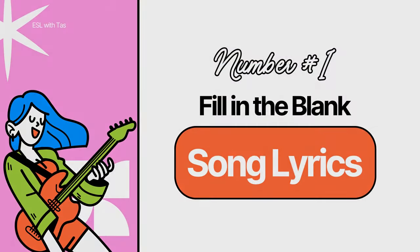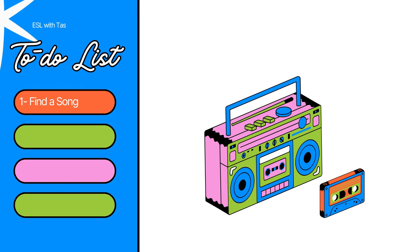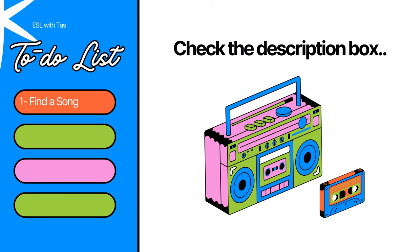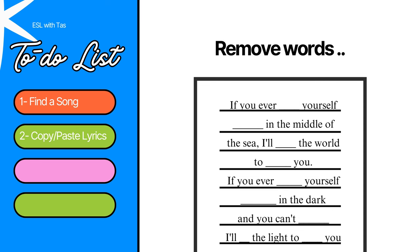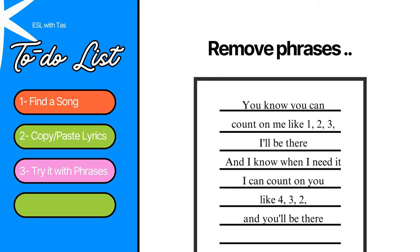Our first activity is fill in the blank for song lyrics. One: find a song — I know songs can be very tricky, so check the links in my description for lists of songs. Two: copy and paste the lyrics into a Word document and remove some of the words, leaving a blank in their place.